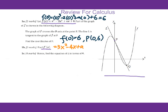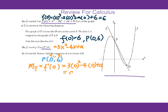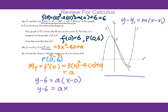For 1c, find the equation of L in terms of a. For point P, we know the coordinate is (0, 6) — that is x1, y1. For the slope of the tangent line, you take the derivative and plug in 0: 3 times 0 squared minus 4 times 0 plus a, so you get a. Using the formula y minus y1 equals m times x minus x1, you get y minus 6 equals a times x minus 0, so y minus 6 equals ax.